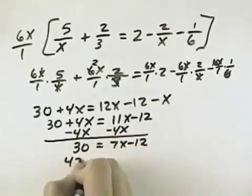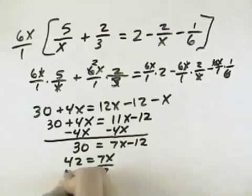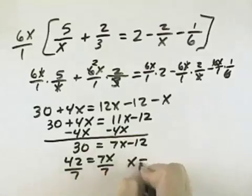Adding 12, I get 42 equals 7x. Finally, dividing by 7, I get x equals 6.